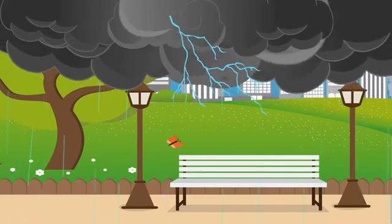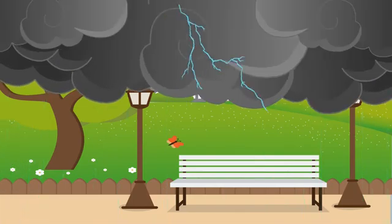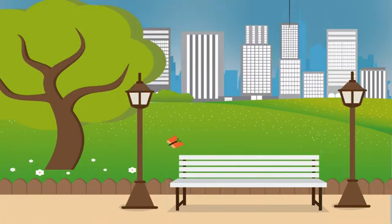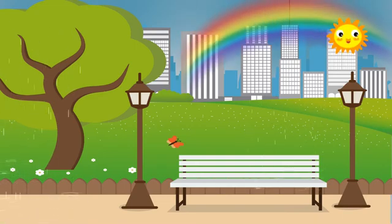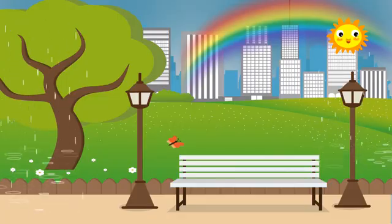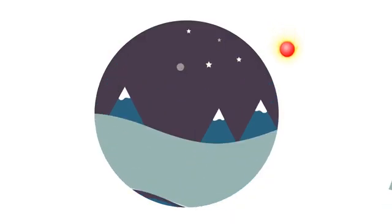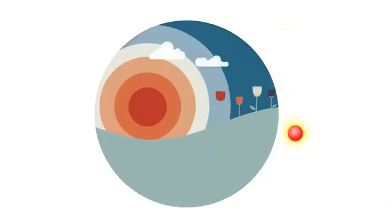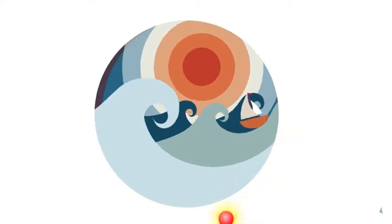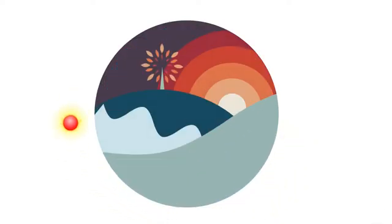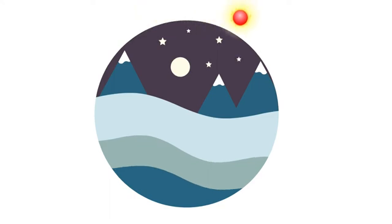Sometimes we see a rainbow when the sun comes out during a rain shower. A rainbow is beautiful. During the year, different parts of Earth get different amounts of sunlight for a period of time. We call these periods seasons.